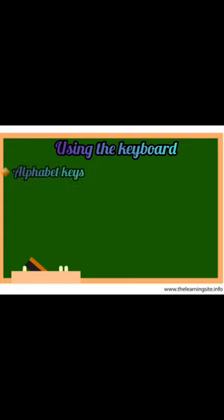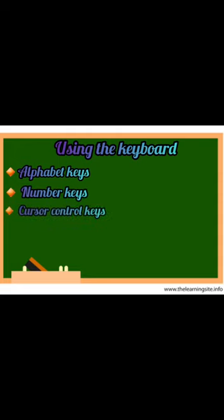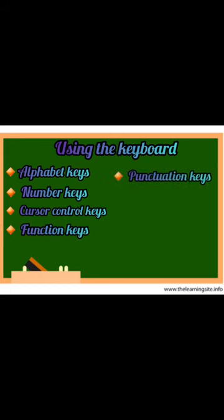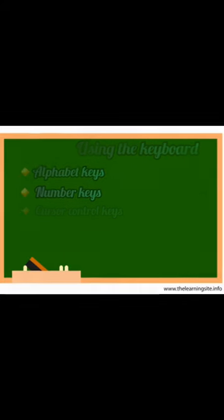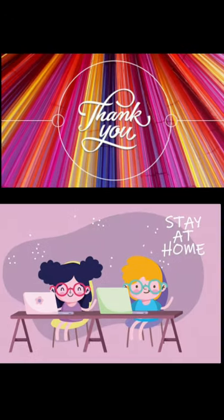So students, I hope everyone has understood this chapter. Let me recap the types of keys: first, alphabet keys; second, number keys; third, cursor control keys; fourth, function keys; fifth, punctuation keys; sixth, symbol keys; and seventh, special keys. Very good! I hope everyone has understood this chapter on Using the Keyboard. Thank you. Stay home, stay safe.